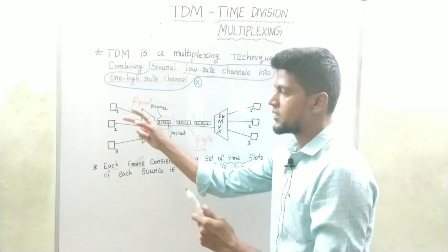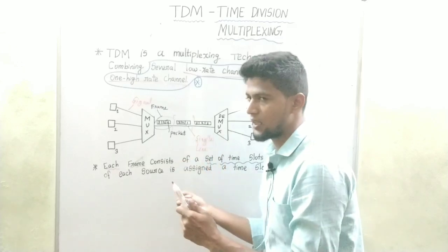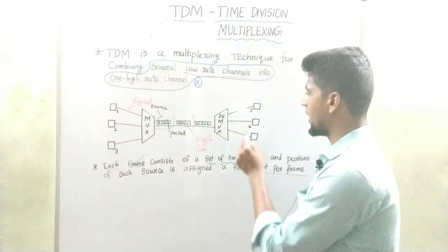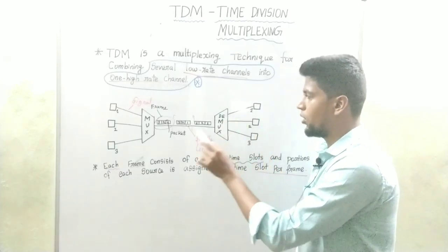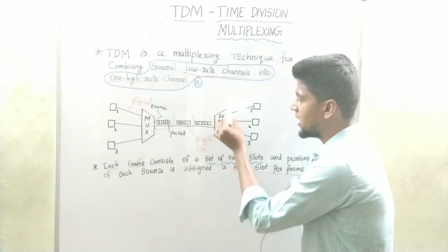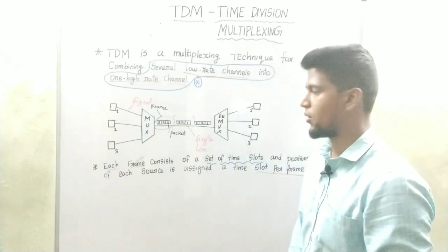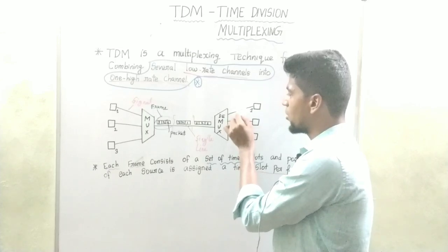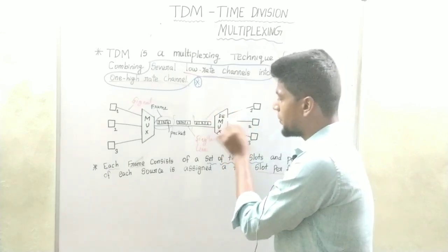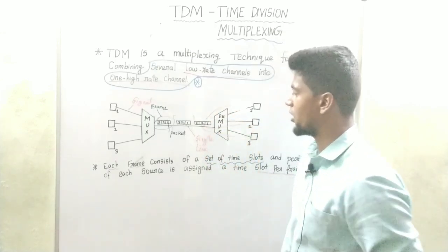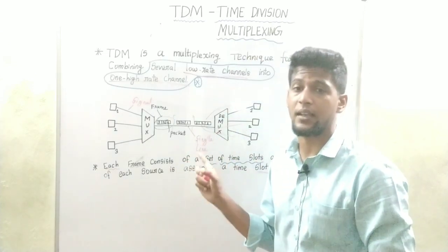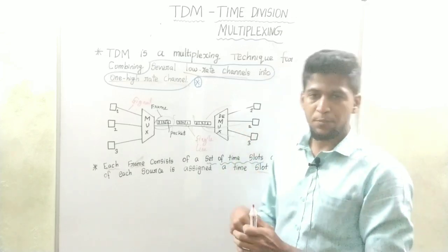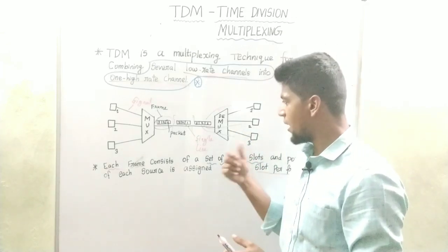If you have a system, you can use a multiplexer. If you do a single line, you can use a demultiplexer. If you use a demultiplexer, you can retrieve all this information one by one and send it to the respective nodes.